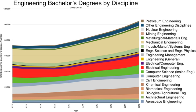The mestrado integrado programs take five years to complete, awarding a licenciatura degree in engineering sciences after the first three years and a mestrado degree in engineering after the full five years. Universities also offer doutoramento programs in engineering. Holding an academic degree in engineering is not enough to practice the profession of engineer and to have the legal right to use the title engenheiro in Portugal.